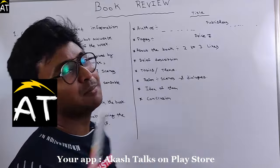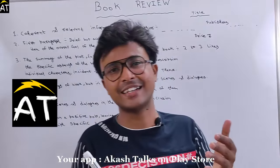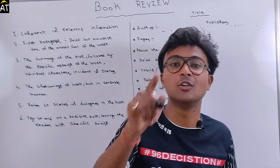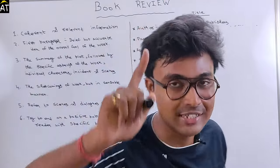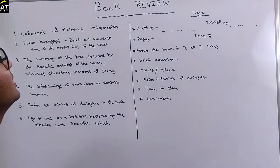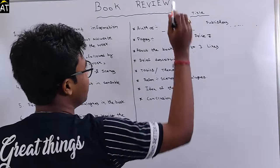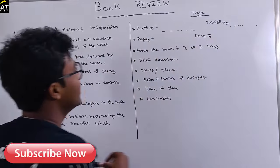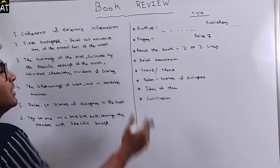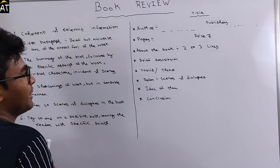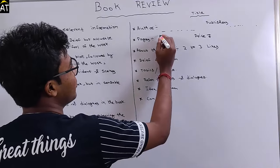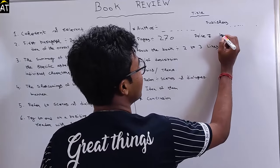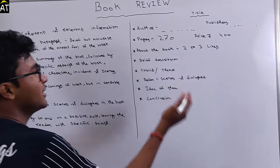I will show a brief glimpse of what you need to write. I'll also post a picture reference on the Learn with Akash Instagram page, so check that out. In the format, you need to mention the exact title, the author who wrote the book, the publisher, the number of pages — for example, 270 pages — and the price, for example, 400 rupees.